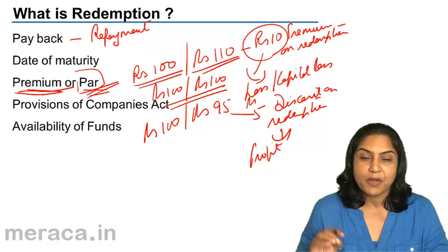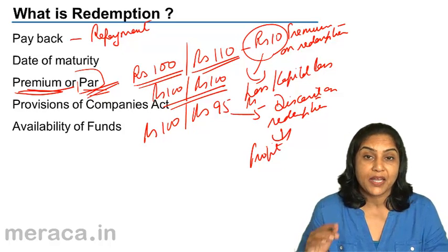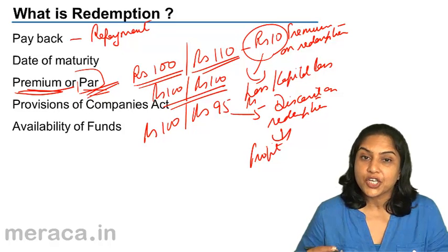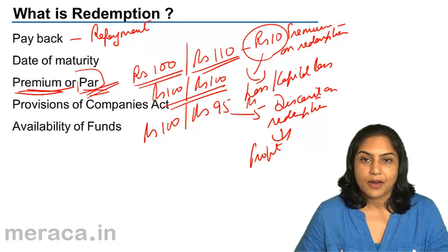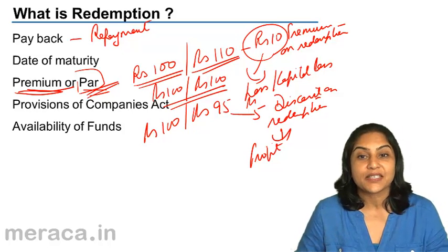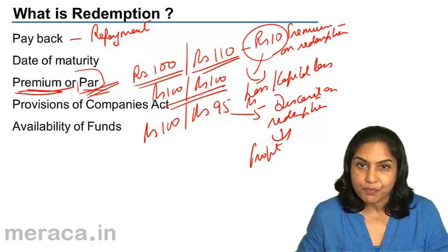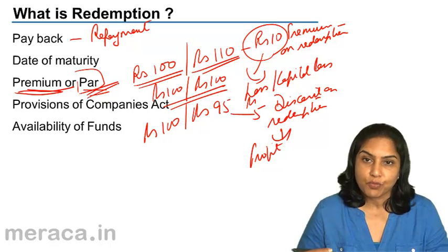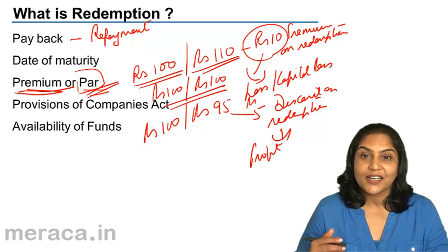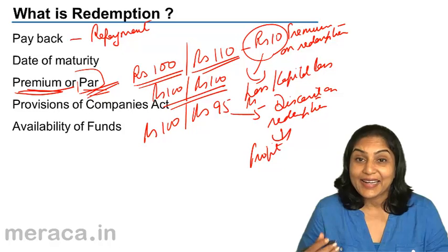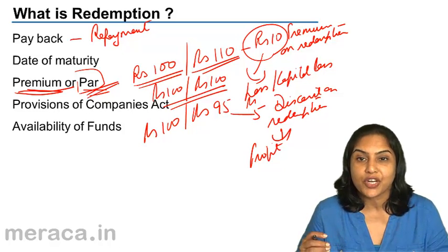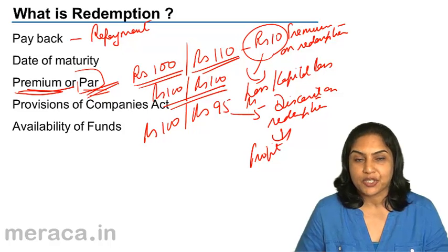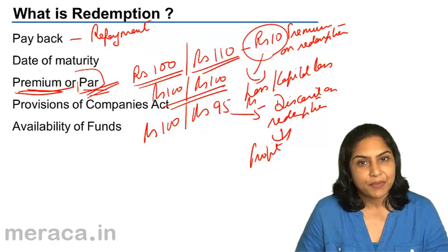Please note: premium on redemption of preference shares is a loss to the company because the company pays more than the face value. Unlike in case of issue, where when we issue shares at a premium, a 100 rupee share is issued but 110 rupees are collected — the rupees 10 of the securities premium is a capital profit. But premium on redemption means we repay 10 rupees more, and therefore it is a capital loss. Similarly, a discount on issue would mean we get less money — that is also a capital loss. Discount on redemption would have been a capital profit, though it hardly happens in practice.